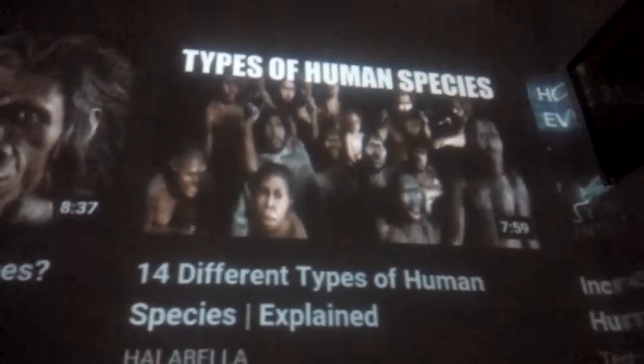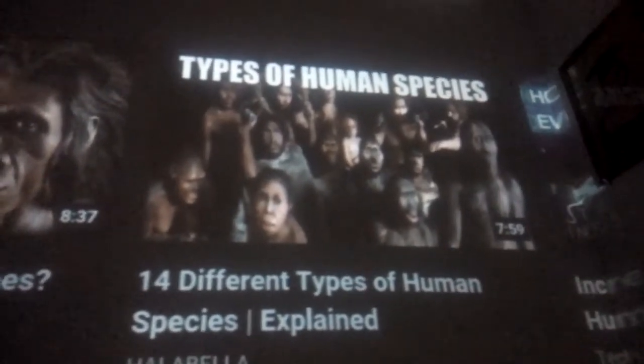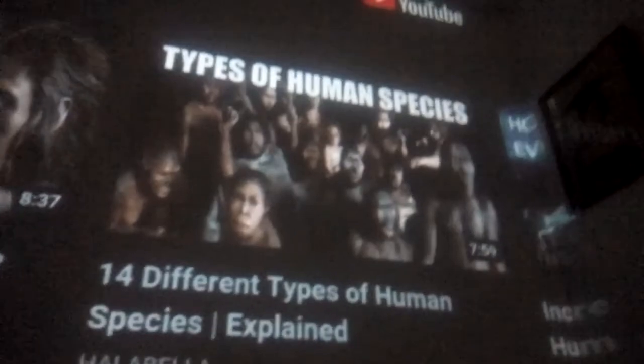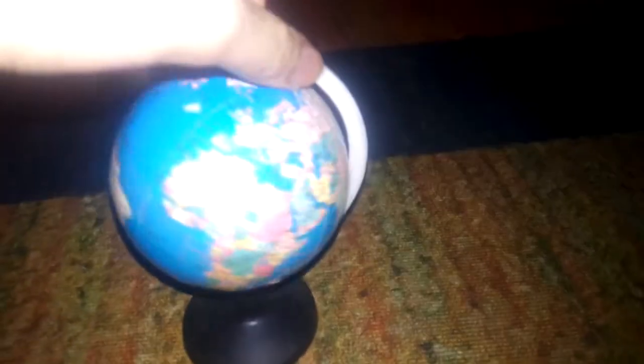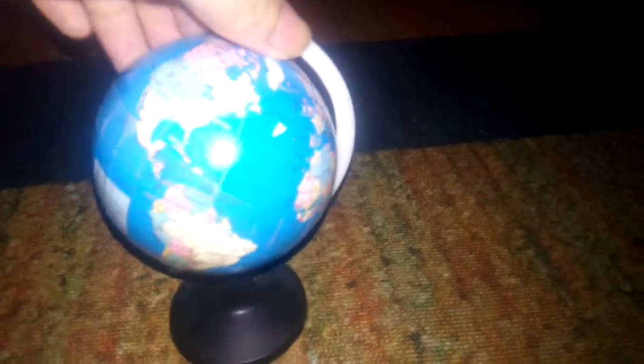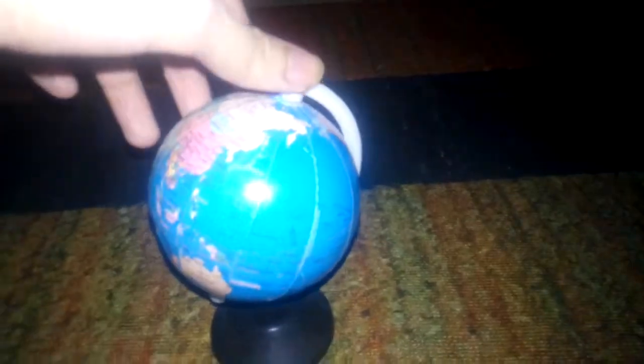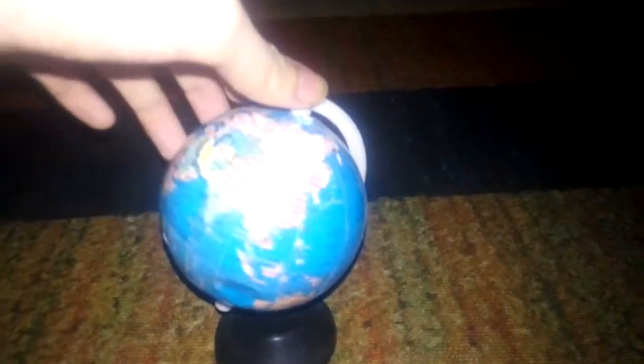Human evolution shows species in the world from ape to man. Things do look like the creature on earth. Before it was started, the earth has become about the humans.